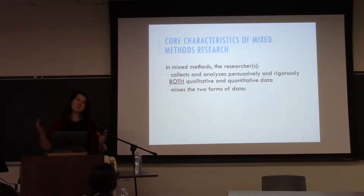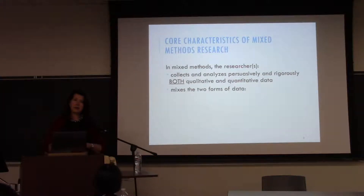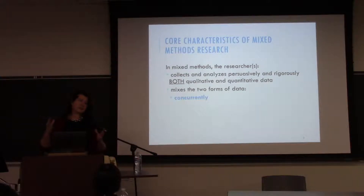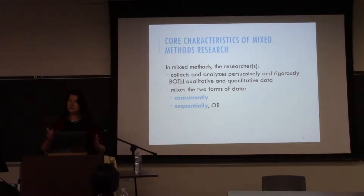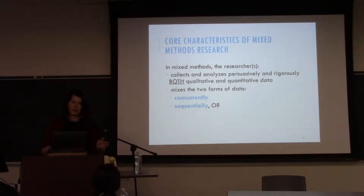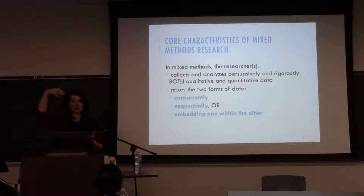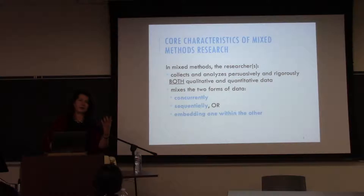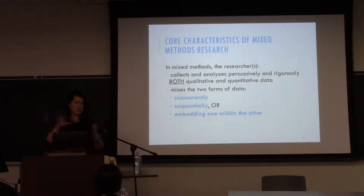When mixing two forms of evidence, it can happen concurrently — you're gathering and analyzing both at the same time — or sequentially — you collect one type of evidence and then another. A third way is embedding: you draw from a subsample of quantitative data to do qualitative analysis. Do you see the difference between those three strategies?